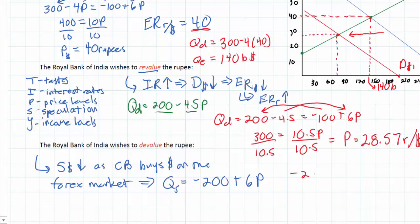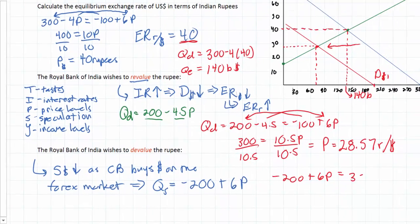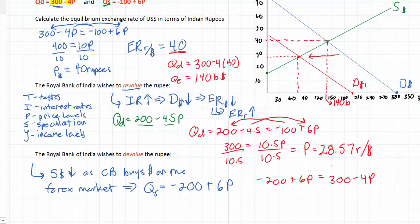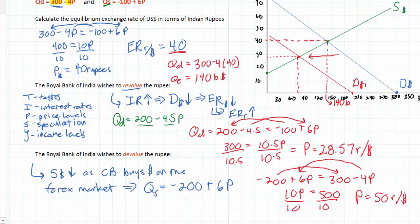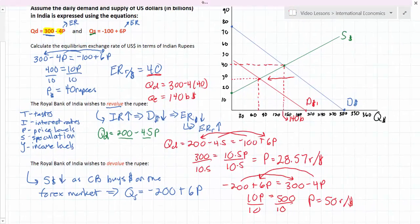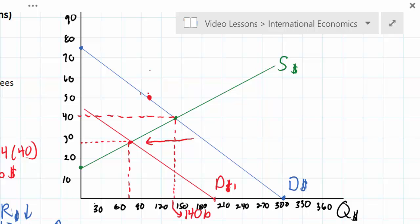Let's calculate the effect. We set the new supply equation of negative 200 plus 6P equal to the original demand equation of 300 minus 4P. Moving terms: 10P equals 500. Dividing both sides by 10, the new equilibrium exchange rate of the dollar is 50 rupees per dollar. On the graph, the supply of dollars in India has decreased but the slope has not changed — only the C variable in the supply equation changed — so this decrease in supply is shown as a parallel shift to the left of the supply curve.